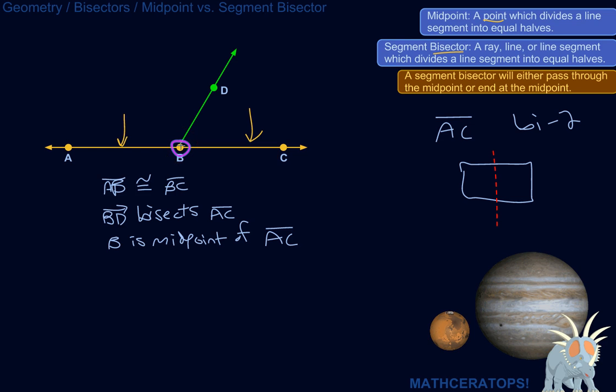And so if you've got the midpoint of a line segment, it splits it into two halves. So this half would be congruent with this half. So, if you've got a midpoint, you can draw a segment bisector from it. If you've got a segment bisector, you've got a midpoint in there somewhere.